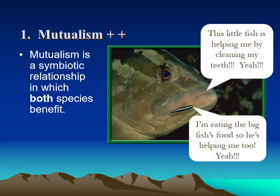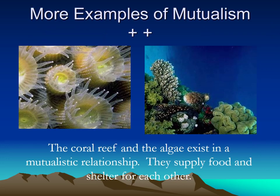Here's an example with a big fish and a little fish. The big fish has a little bit of food stuck between its teeth. The little fish comes along and eats that food, so the little fish got something good — a meal — and the big fish got something good — it got its teeth cleaned. Both of them got something good: mutualism.